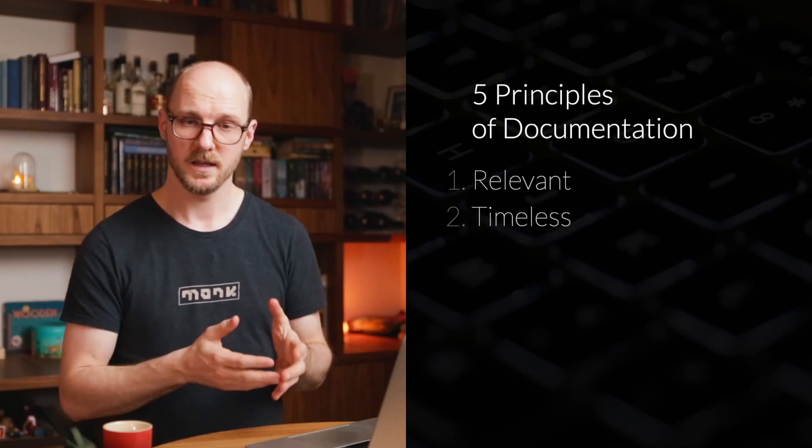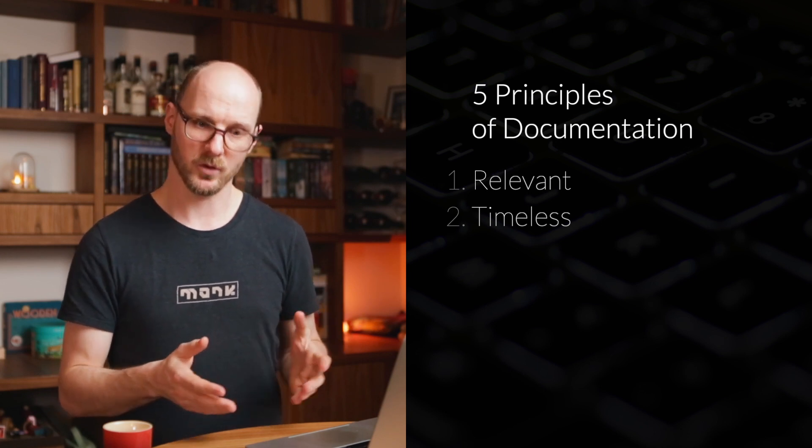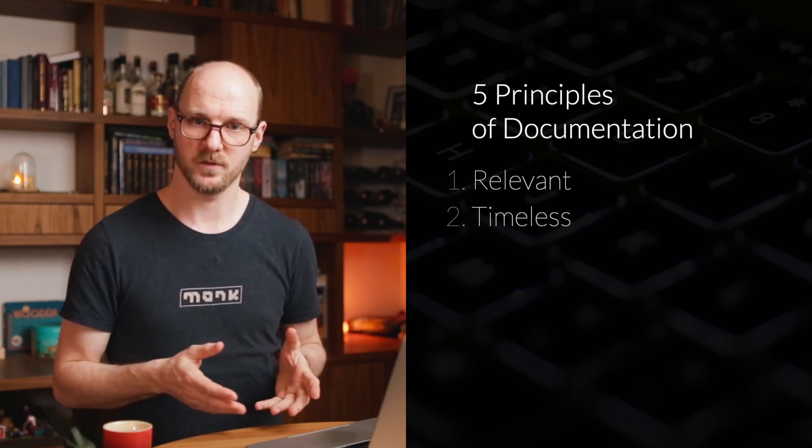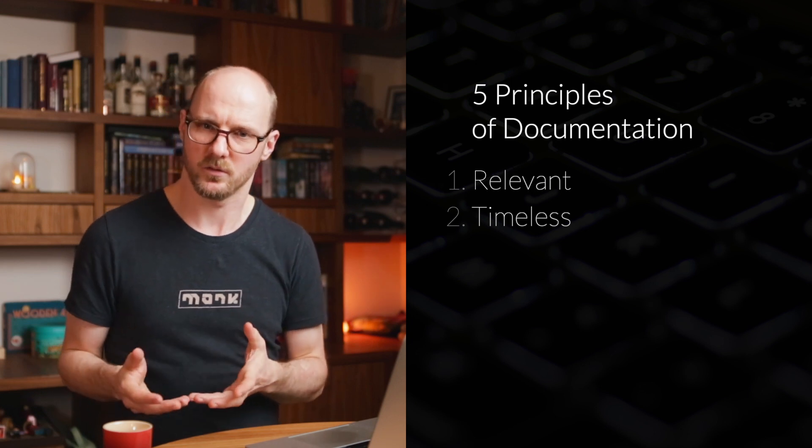Next, documentation should be timeless. Keep it as general as possible. Focus on the underlying concepts — the things that don't change on the next rotation. Avoid referencing specific versions or pointing to specific files, stuff that gets out of date really soon. An example is a folder structure or a design pattern used all over the codebase. These things are reused so often that they're probably a structural concept you want to document — like, this is how we always solve this kind of problem.